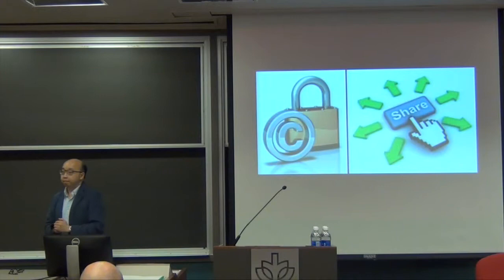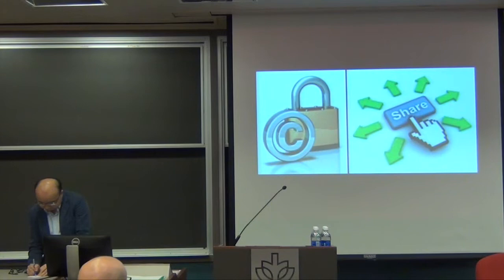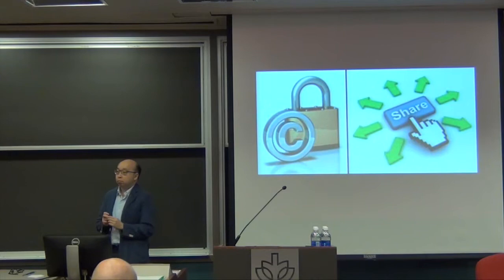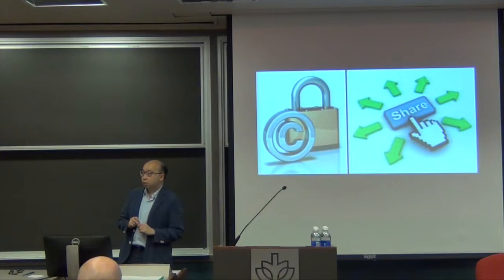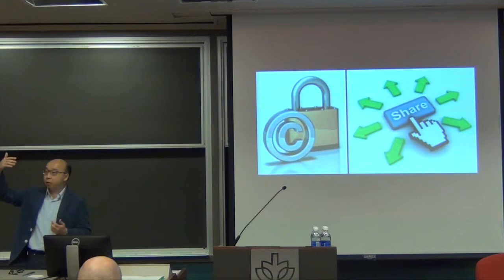It seems to me that the derivative works right is under-theorized in the case law because poor incentives rely on the reproduction right, and even though it's the noun 'copy' that's used, that right hasn't really seen strong application. Would making the changes you're urging just push a lot of problematic cases down the line to the derivative works right or the distribution right — whereas now they're often glossed over because the court handles it all through reproduction?